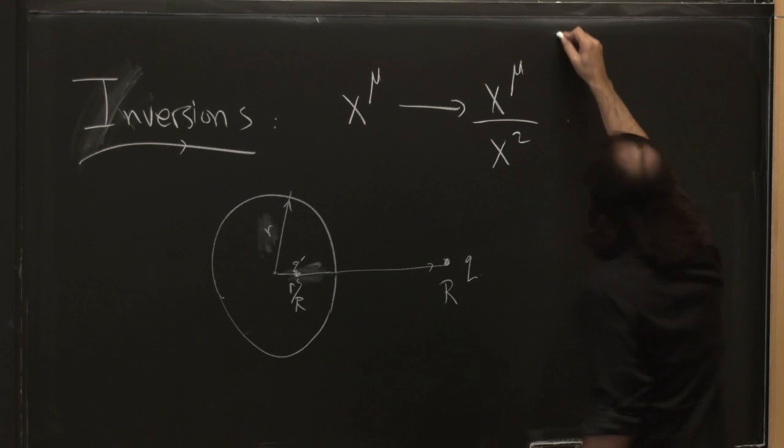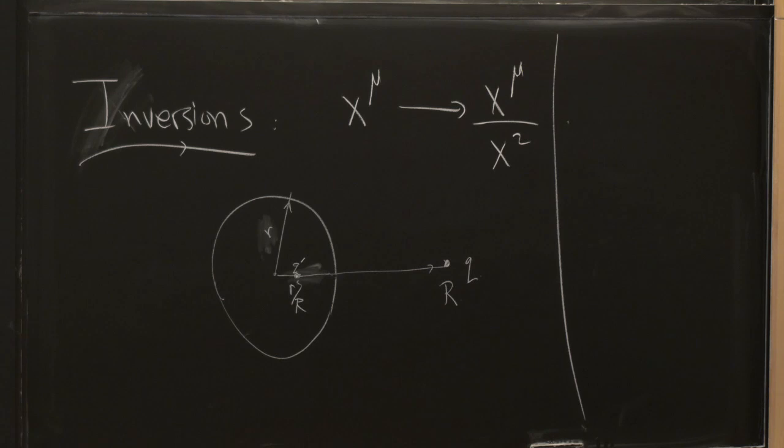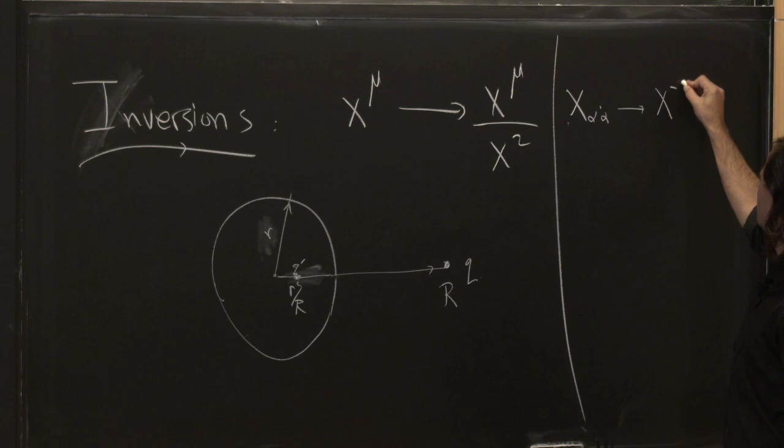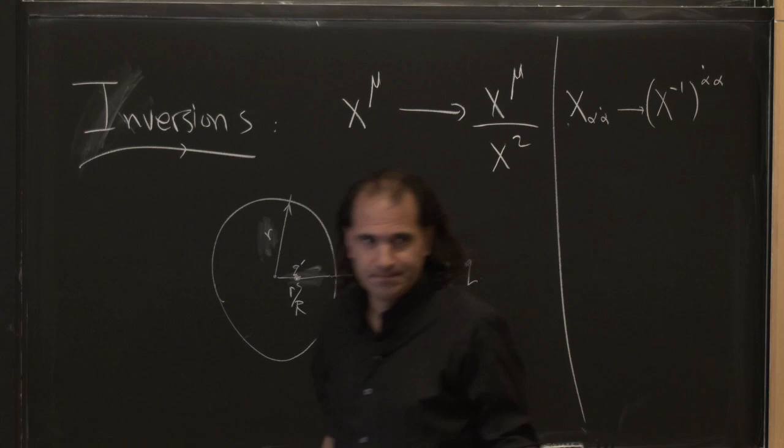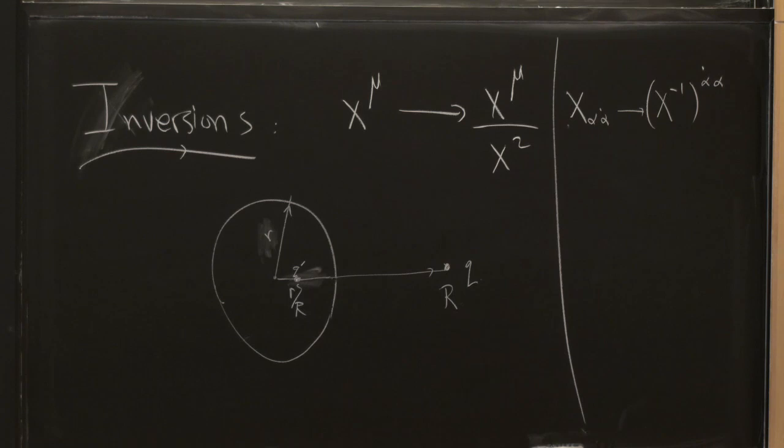By the way, what is this action in terms of our favorite alpha, alpha-dot coordinates? It's just that the matrix x-alpha-alpha-dot gets literally inverted to the inverse matrix with an upstairs alpha-dot-alpha. So that's a discrete symmetry.